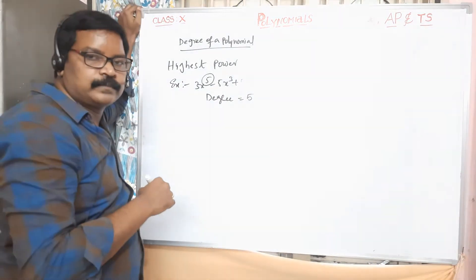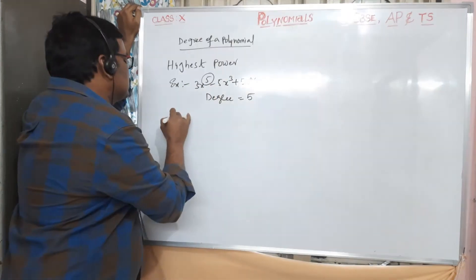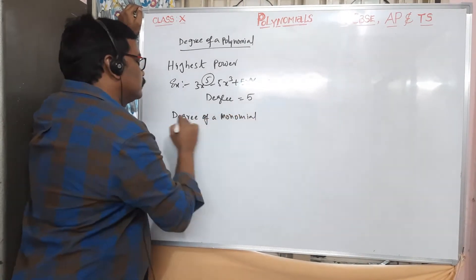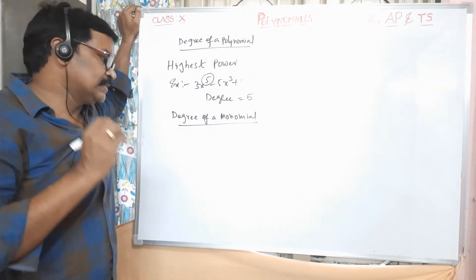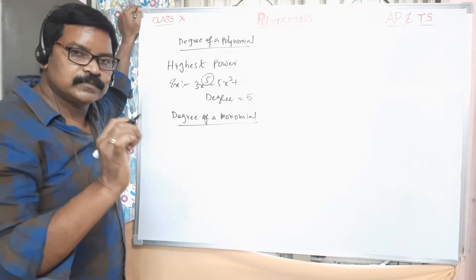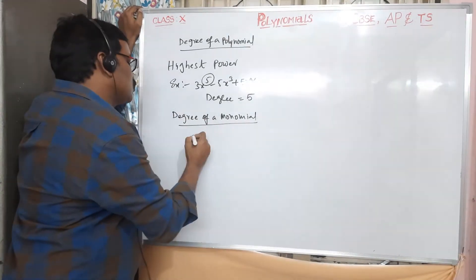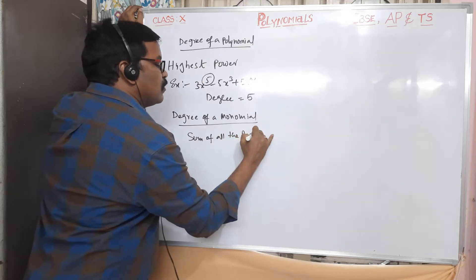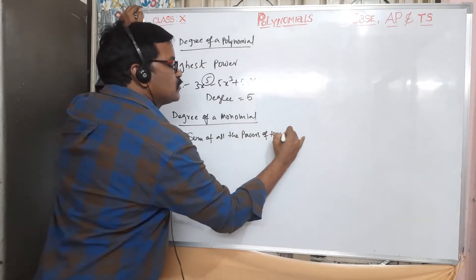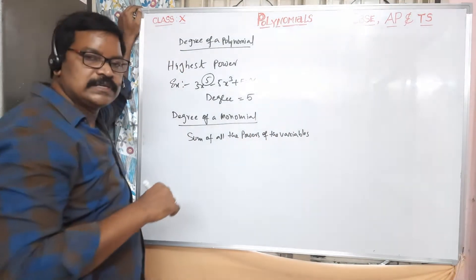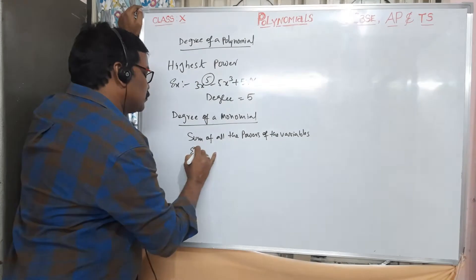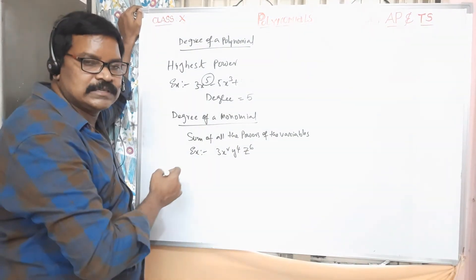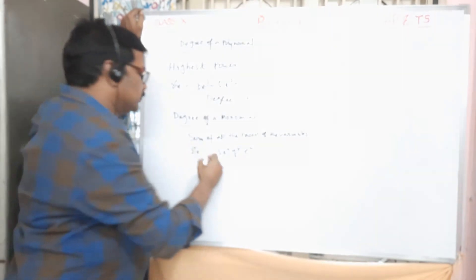The degree of a monomial — a single term — is the sum of all the powers of the variables. For example, 3x²y⁴z⁶ is a monomial since it has a single term, and its degree is the sum of the powers: 2 + 4 + 6 = 12.